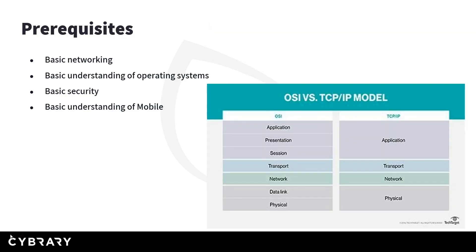Some of the prerequisites you want to have before you start this course, and even before you attempt the Certified Ethical Hacker exam, include a basic understanding of networking concepts — things like the OSI and TCP/IP model, what a switch is, what a router is. You'll also want a basic understanding of operating systems — how Windows, Linux, and Mac OS work — as well as basic security concepts and terminology, and a basic understanding of mobile, since a lot of exam content on different certifications is now focused on mobile.